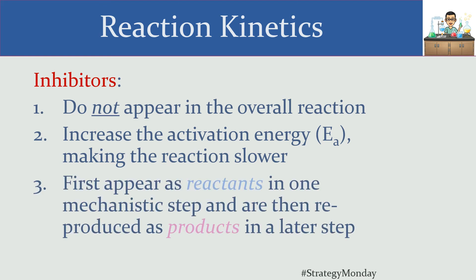Inhibitors also go in and pop back out — they first come in as reactants and then get reproduced as products. To distinguish an inhibitor from a catalyst, since their order of appearance is the same, you look at the effect: if adding that molecule makes your reaction faster, it's a catalyst; if it makes your reaction slower, it's an inhibitor.